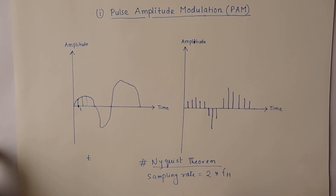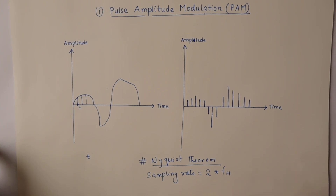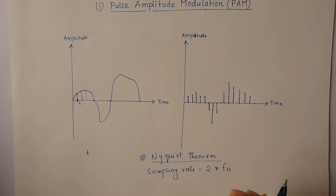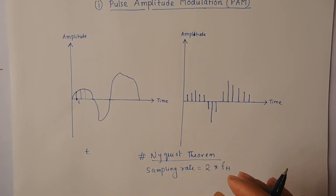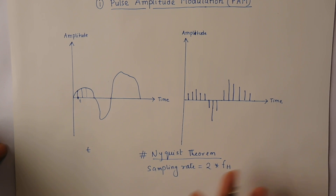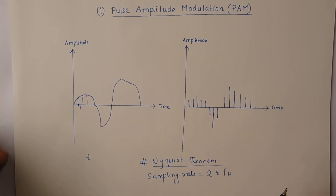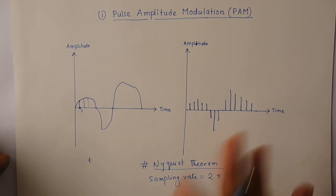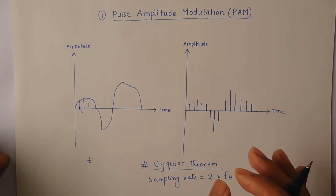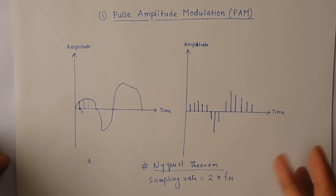So the Nyquist Theorem says the sampling rate must be at least two times the highest frequency. That is the first step. Although in PAM we translate the original signal into a series of pulses, it is still an analog signal. So to convert this completely into a digital signal, we follow the next step: Quantization.